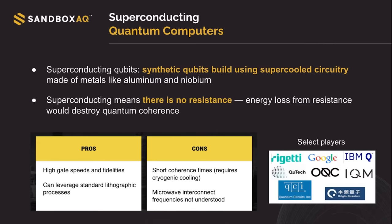In superconducting quantum computers, a good thing is that we have high gate speeds and fidelities, and they can also use standard processes that we already use, like lithography for example. What does it mean to have high gate speeds and fidelities? These are two very important properties in quantum computers.